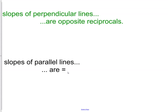What we mean by this is, if the slope of the first line was two-thirds, the slope of the line perpendicular to that would be negative three-halves. So we change the sign and make the reciprocal.